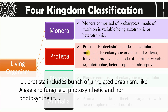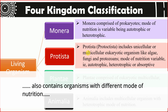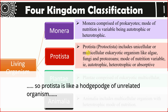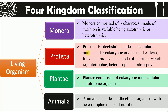Protista in this system includes fungi, algae, and protozoa with variable modes of nutrition. These are among the limitations of the four kingdom classification system. This eventually led to the development of the five kingdom system of classification.